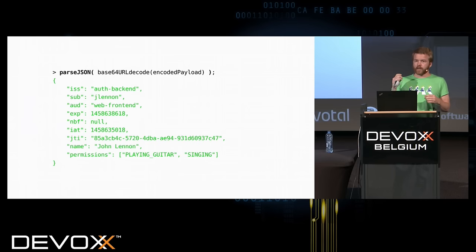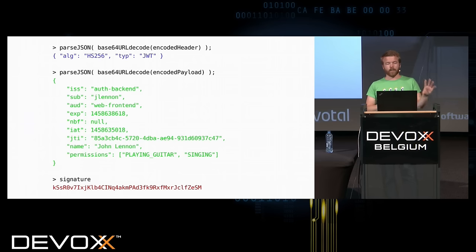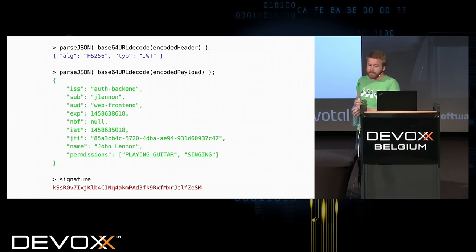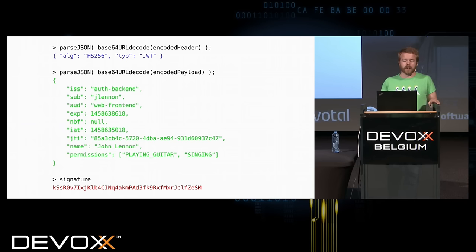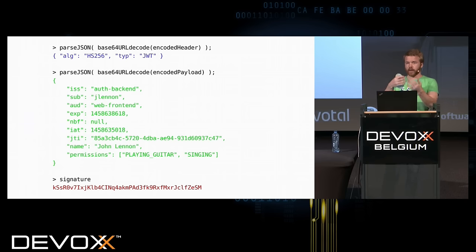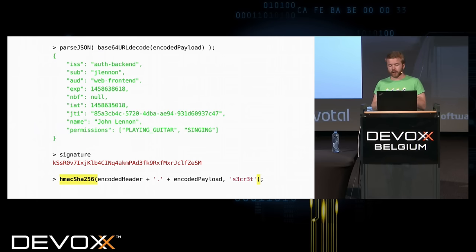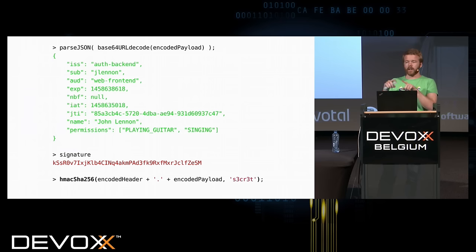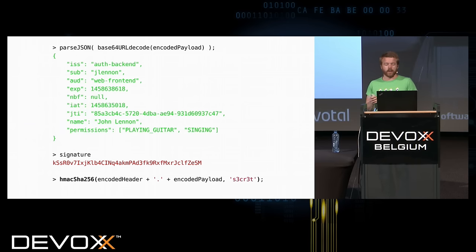So how does the server trust this thing? If you remember, there are three parts, and in the first one — the header — there is an algorithm. The algorithm here is HMAC SHA-256. What I need to do as a server to trust this information is to use this algorithm and apply HMAC SHA-256 on the encoded header, a dot, and the encoded payload — that's the first part of the token, actually. This hashing function needs a secret — so don't use an obvious one.